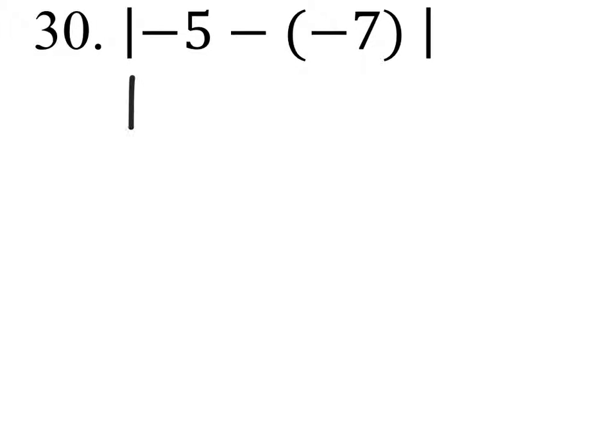So make sure that you do the absolute values of this. You do everything on the inside first, so that would become a big fat plus. Negative 5 plus 7 is 2, the absolute value of 2 is 2.